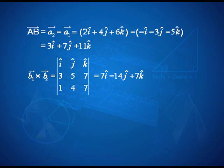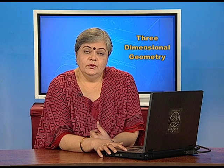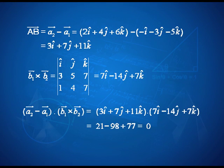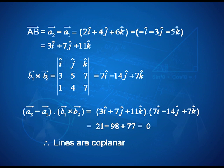Now let us see what b1 × b2 looks like. Using the determinant form, I get b1 × b2 = 7i − 14j + 7k. We now verify that AB is perpendicular to b1 × b2 by finding their dot product. As you can see, the dot product turns out to be 0, which implies that the lines are coplanar.